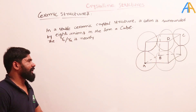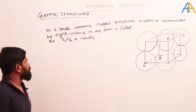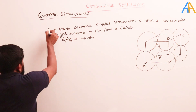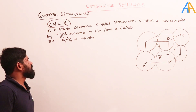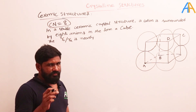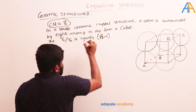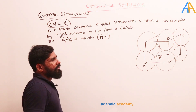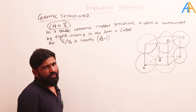We will see one more problem: how to calculate the cation-to-anion ratio instead of memorizing from the table. In a stable ceramic crystal structure, a cation is surrounded by eight anions, so the coordination number is eight — eight anions in the form of a cube. The first value in the range can be taken directly: it is root(3) minus 1. Root(3) is 1.732, so minus 1 gives 0.732. Instead of memorizing, we will see how to derive this using geometry.